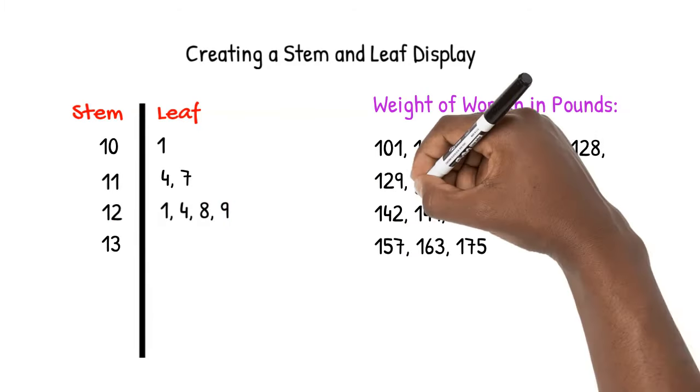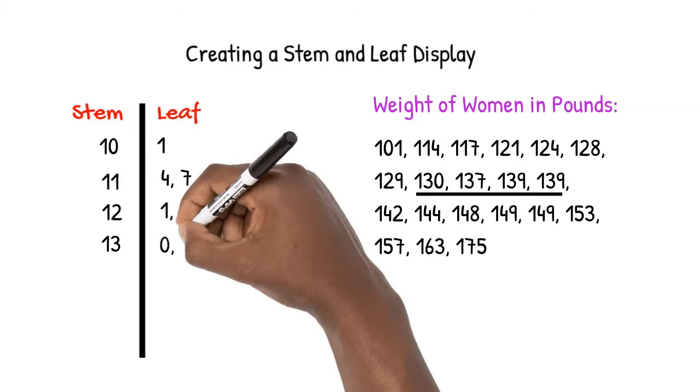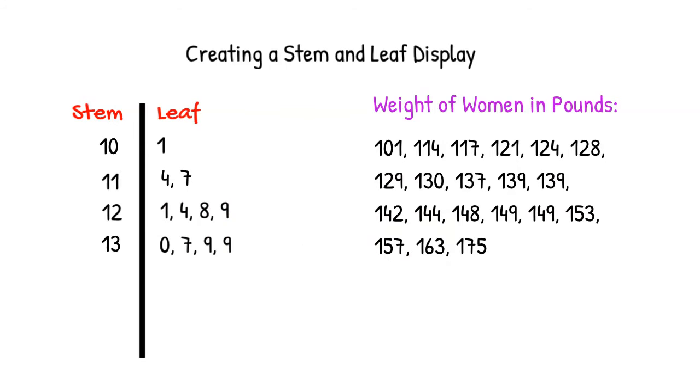With a stem of 13, the values in our leaf are 0, 7, 9, and 9.